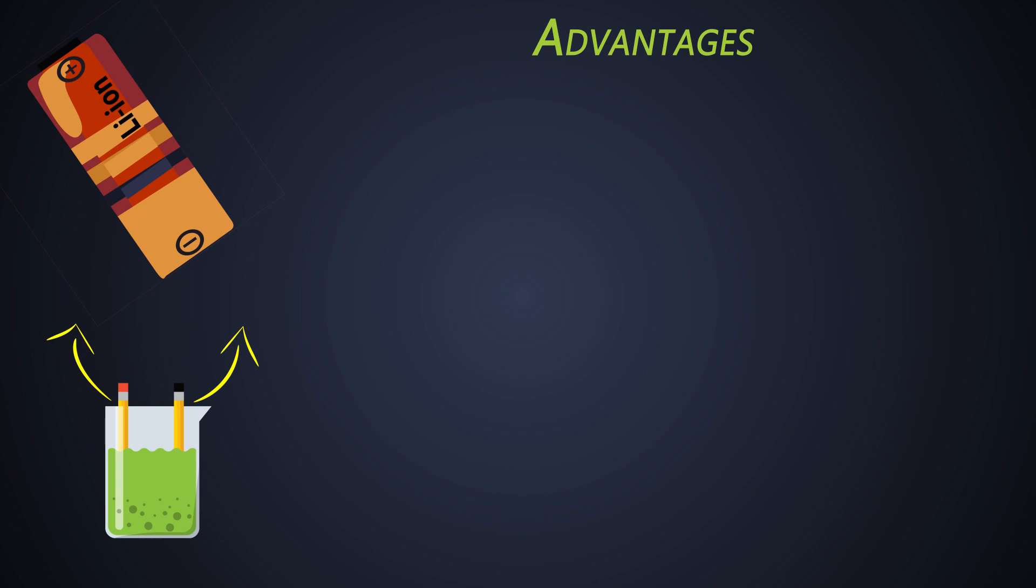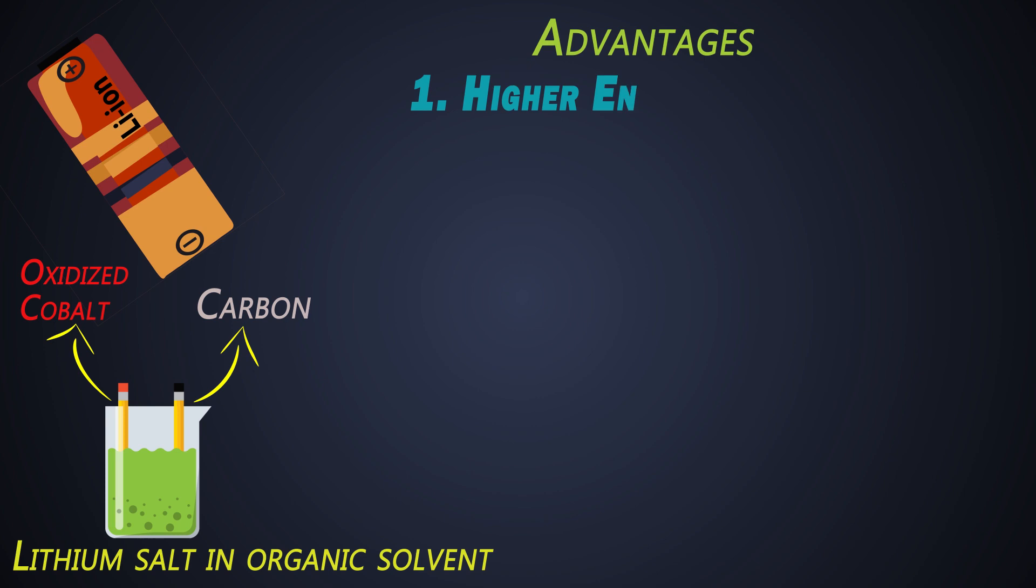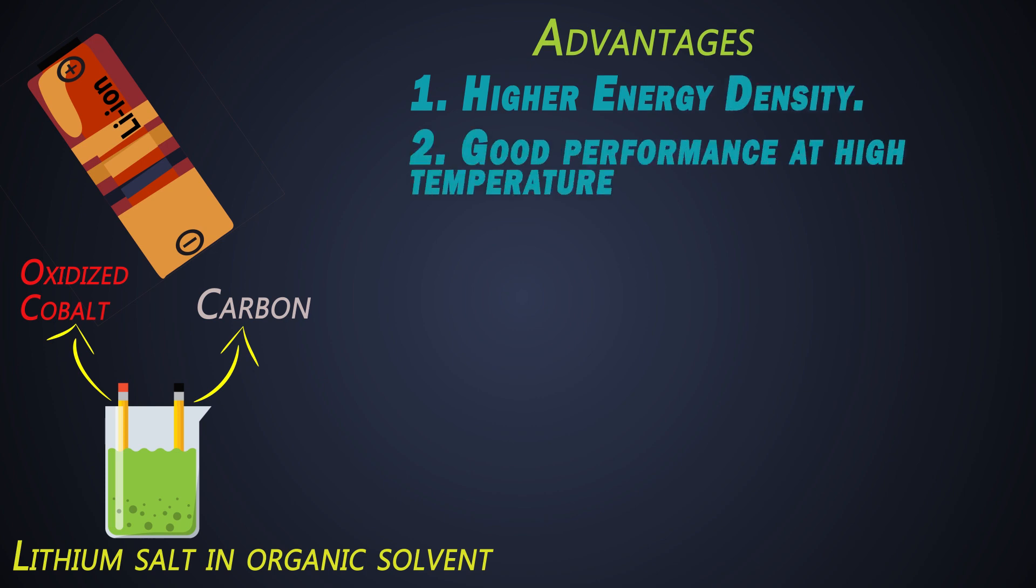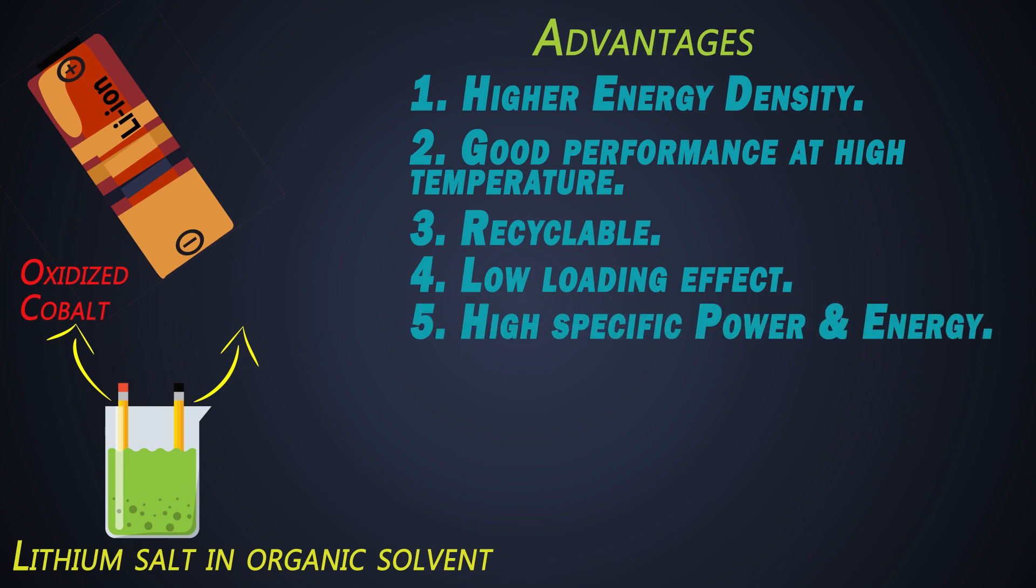Now let's come to the lithium ion batteries. The positive electrode is made up of oxidized cobalt material, and negative electrode is carbon material, mostly graphite. The electrolyte of this battery is lithium salt solution in an organic solvent. This battery has very high energy density. It gives good performance at higher temperatures. It is recyclable. It has very less loading effect. The specific energy and specific power of this battery is also very high. This battery has longer life cycle. However, these batteries are very costly. Recharging still takes quite a long time, but it is better than most of the batteries.